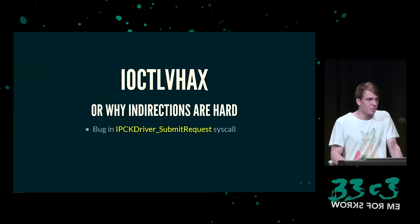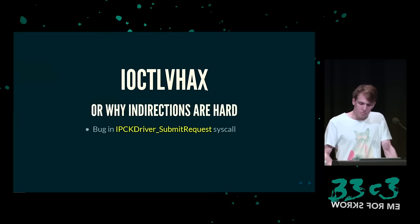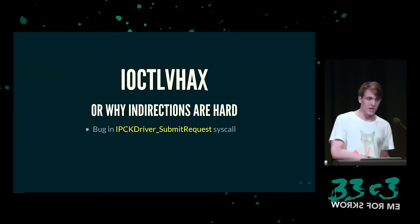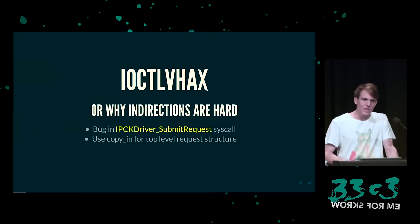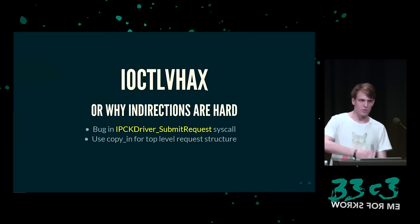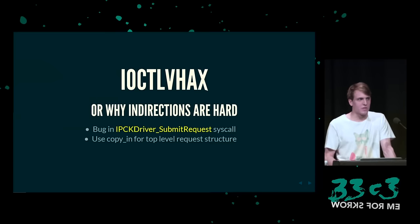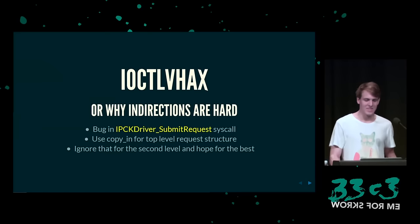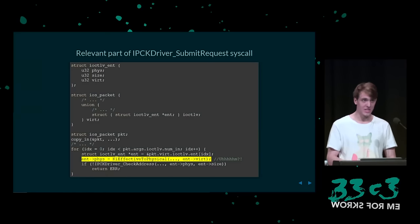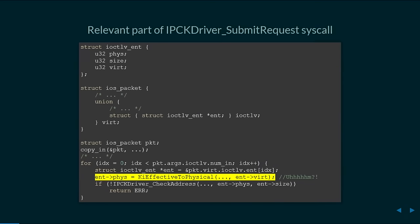Das ist einfach ein Bug in einem APC-K-Driver-Submit-Request-Syscall. Damit übermitteln wir Requests vom User-Mode. Der Kernel benutzt Copy-Ins, um diese Requests vom User-Mode zum Kernel-Mode zu nehmen. Es gibt nur eine bestimmte Art von Requests, die eine Indirektion beinhaltet — das haben wir für das zweite Level einfach ignoriert und für das Beste gehofft. Da ist ein iOS-Packet in der zweiten Zeile und ganz oben ein Special-Request-Entry.